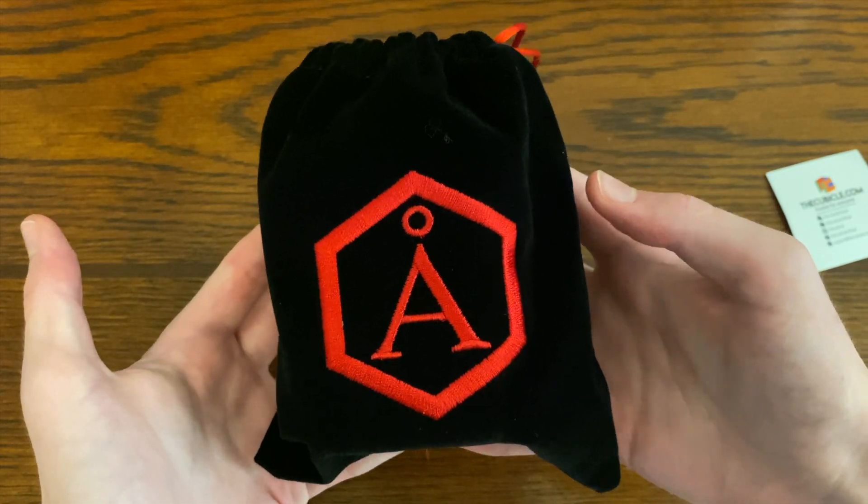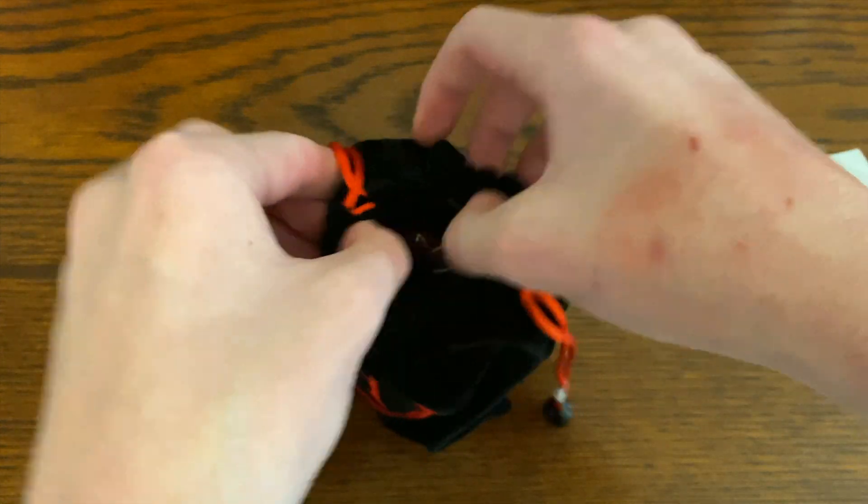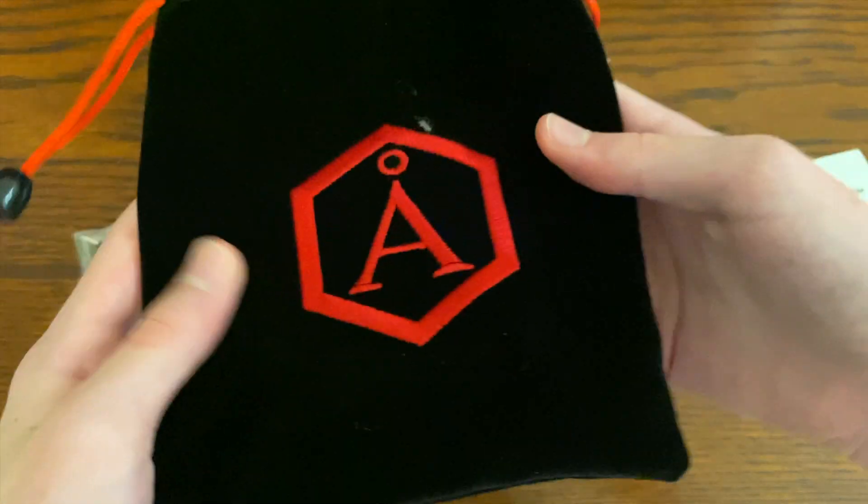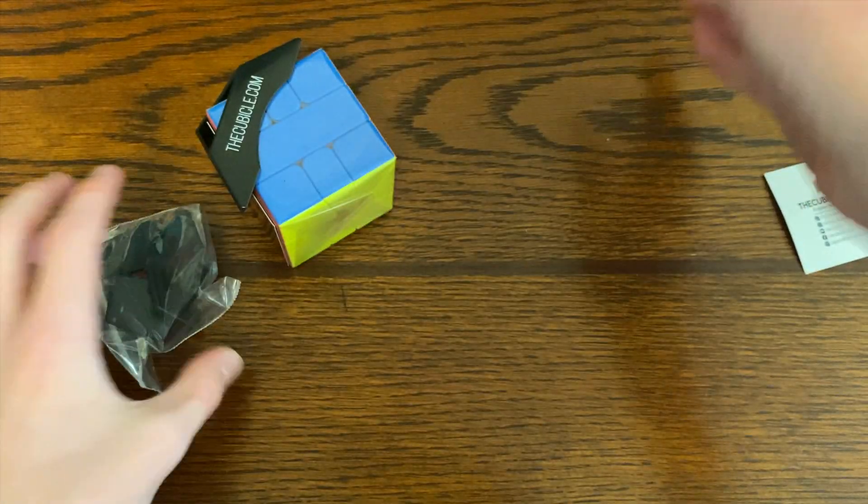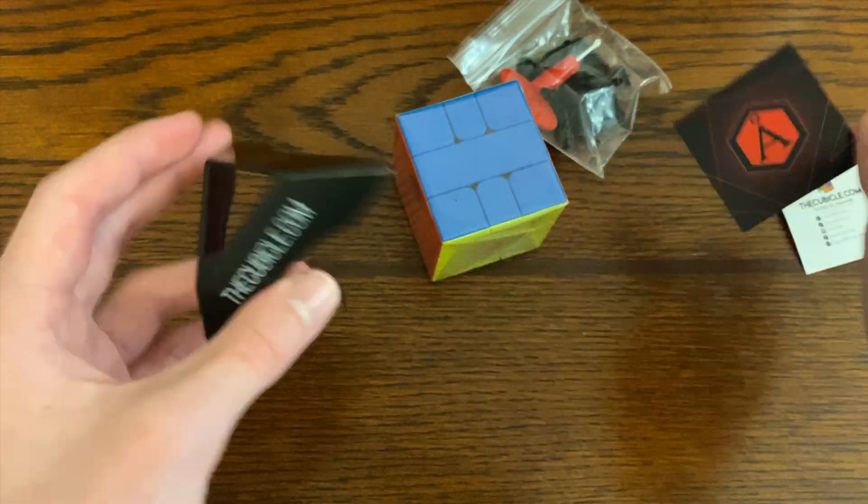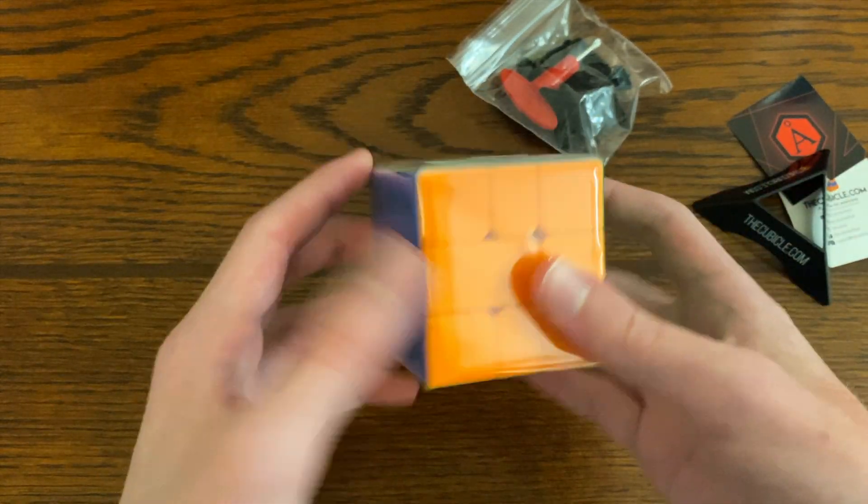And here should be the Angstrom MGC Square-1. So we get this nice bag, black caps and a screwdriver, an Angstrom card, a stand, and the cube.